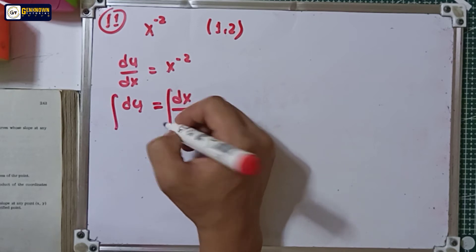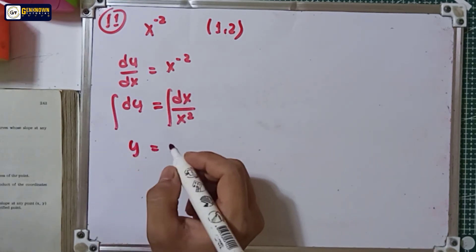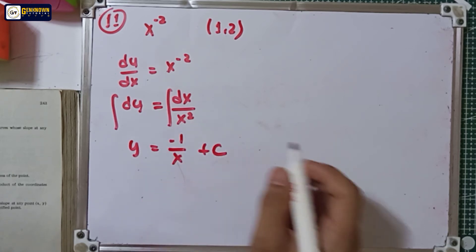So integrating both sides, the integral of dy is y. Integral of dx over x squared is negative 1 over x plus the constant.